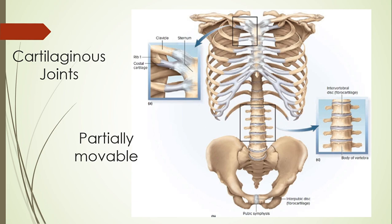If there was no movement that could occur — say, if the ribs were directly fused with the sternum — you wouldn't be able to inflate your lungs that much. You wouldn't be able to get as much air in. So there needs to be a small amount of movement occurring to allow that flexibility between the ribs.